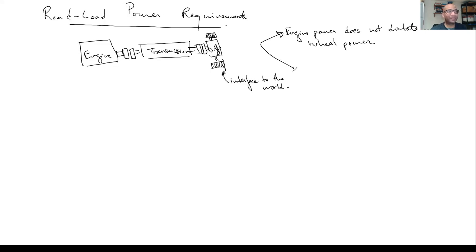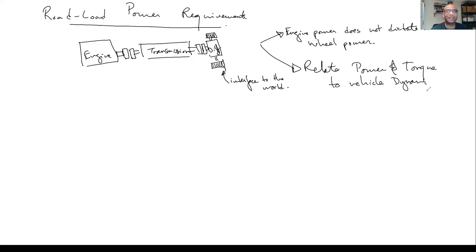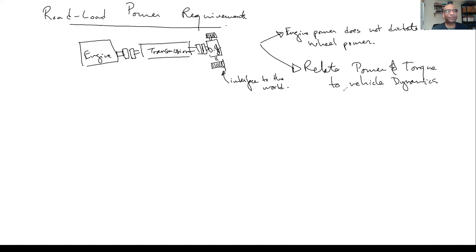The second part is: mathematically, how do we relate power and torque to vehicle dynamics? It's a very small subset of vehicle dynamics — really just acceleration. If you're designing an entire vehicle you'd worry about cornering forces and how accelerating in a corner affects handling, but within the context of this class, when we talk about vehicle dynamics we're talking about acceleration or steady speed at a grade. We need to relate power and torque to those — inclination, speed, etc.